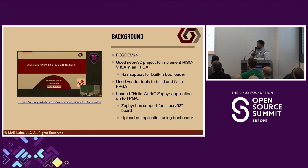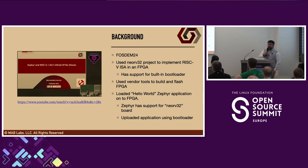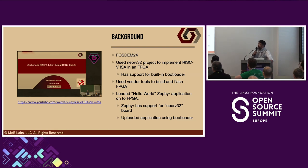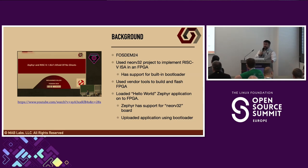A little bit of background: I gave a talk at FOSDEM that's a precursor to this talk. There, because of my recent work, I was interested in FPGAs and seeing how an embedded software engineer can work with FPGAs. I used the NeoRV32 project to implement a RISC-V ISA in an FPGA. There's a really nice GitHub repository with support for a built-in bootloader, and there's also support in Zephyr for a NeoRV32 SoC. You can check out that talk via the YouTube video — I was able to load a Hello World application in Zephyr onto an FPGA.